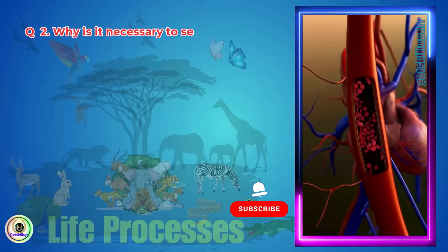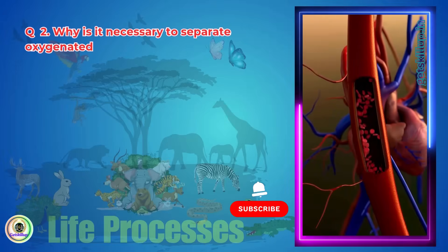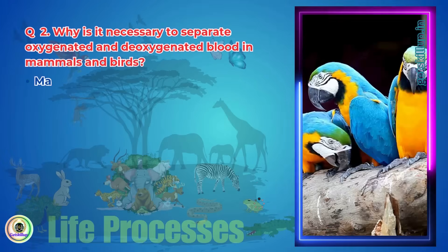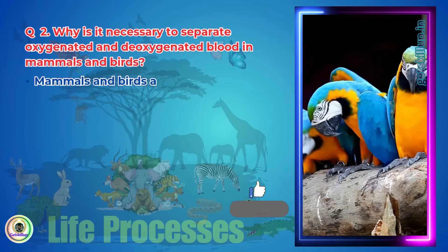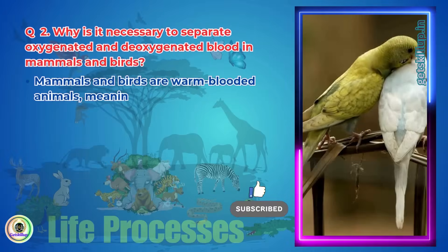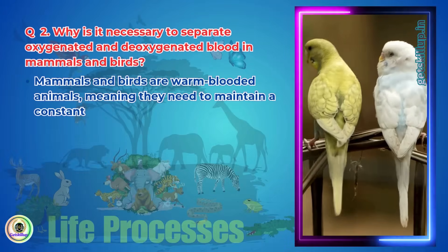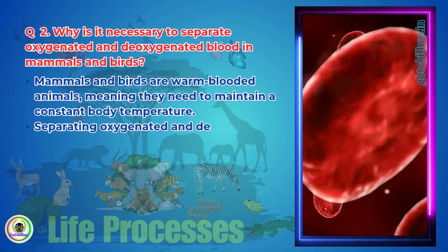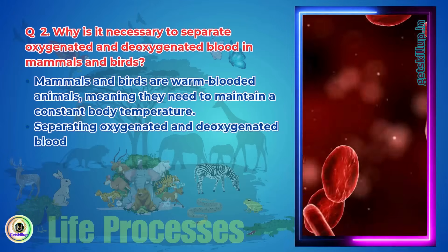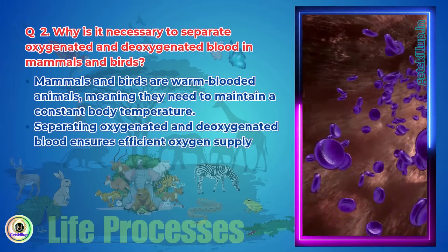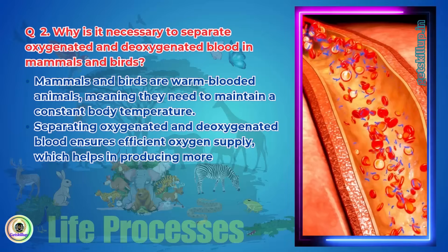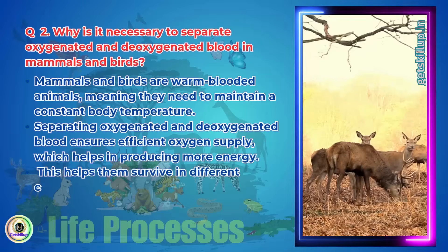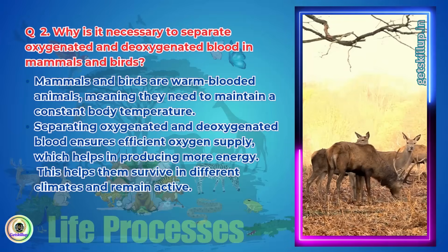Question 2. Why is it necessary to separate oxygenated and deoxygenated blood in mammals and birds? Mammals and birds are warm-blooded animals, meaning they need to maintain a constant body temperature. Separating oxygenated and deoxygenated blood ensures efficient oxygen supply, which helps in producing more energy. This helps them survive in different climates and remain active.